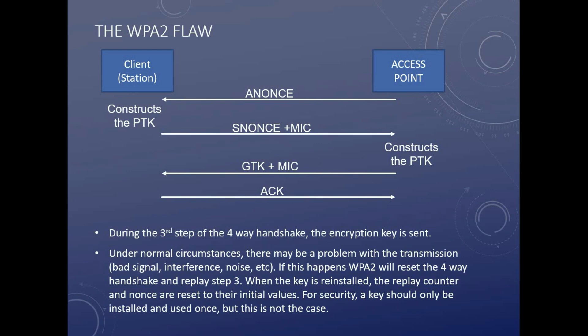When the key is reinstalled, the replay counter and the nonce — the initialization vector, or packet IDs — are reset to their initial values, most of the time zero. For security, keys should only be installed one time and used one time. But here the key is installed twice and the counters are reset. If the four-way handshake under normal circumstances didn't complete, you never got the key so it's not a problem. But if you did get the key and this step was told to repeat, you'll get the key again and the values will be set to zero.